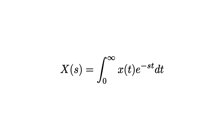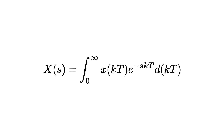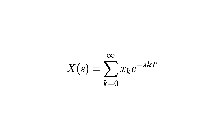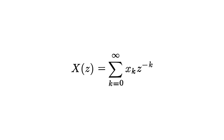The idea behind the Z-Transform is that we want to take the tool we use for continuous signals and systems — the Laplace transform — and convert it into an equivalent tool for discrete signals and systems. Starting from the Laplace transform, we replace small t with kT because our data is sampled at discrete values of k. Then we change the continuous integral into a discrete summation. Next, we make the substitution Z = e^(sT) to make the algebra nicer, and that gives us the definition of the Z-Transform.